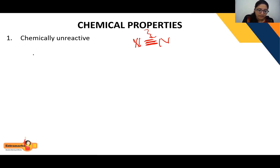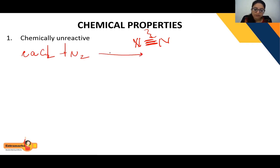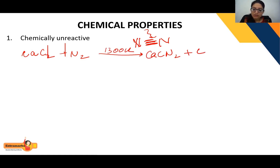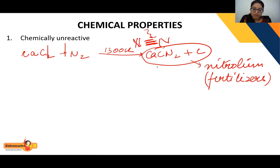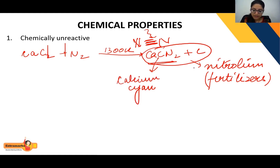However, nitrogen does show some reactions. A very famous reaction is with calcium carbide: CaC₂ reacts with N₂ at a very high temperature of around 1300 K to give CaCN₂ plus C. This combined product, CaCN₂ (calcium cyanamide) plus carbon, is known as nitrolim, and nitrolim acts as a fertilizer.